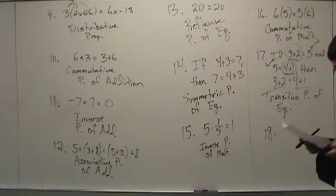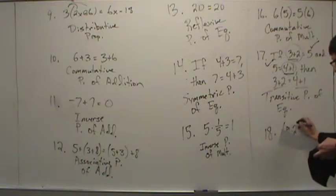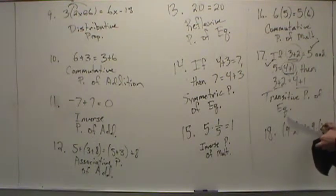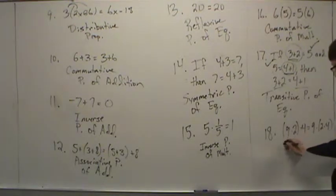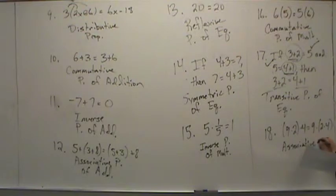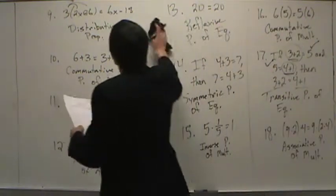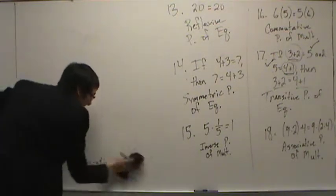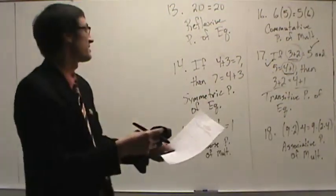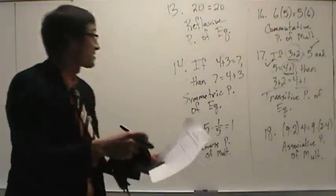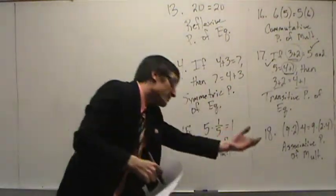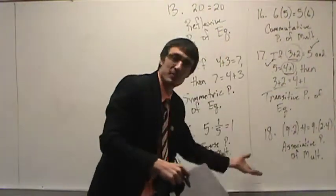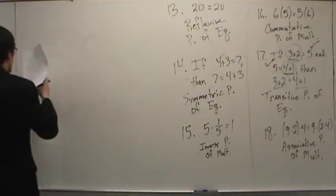Number eighteen: the quantity nine times two times four is equal to nine times the quantity two times four. Parentheses give a clue to either distributive or associative. In this case we have all multiplications, so this is the associative property of multiplication. I'll leave that up so you can fix any mistakes — the practice quiz is designed for you to use as notes so you have examples to study in the future, including for your SOL review. Don't throw it away.